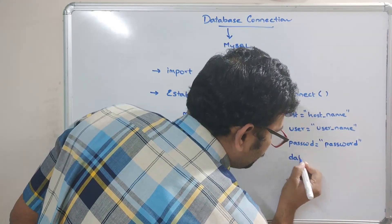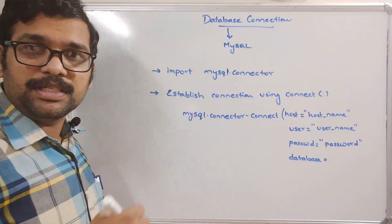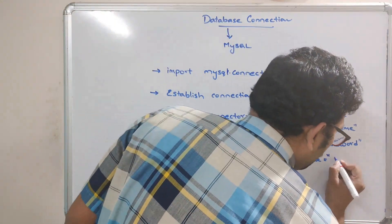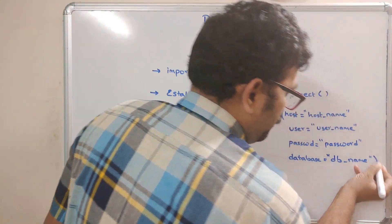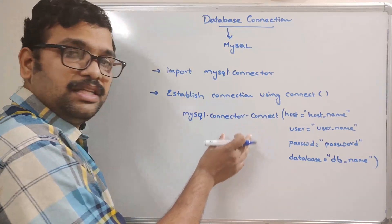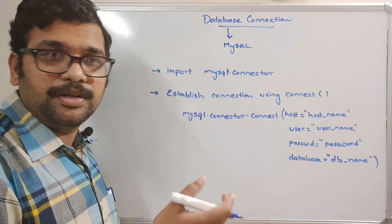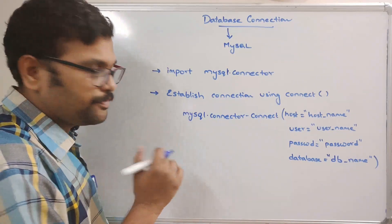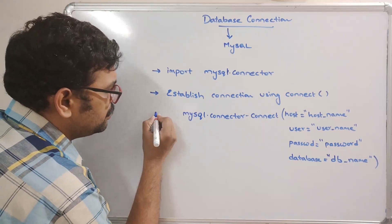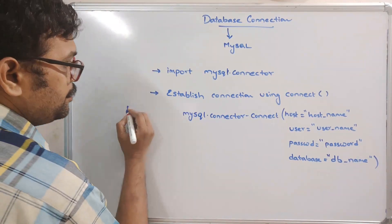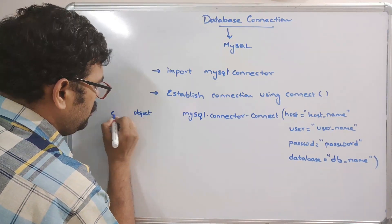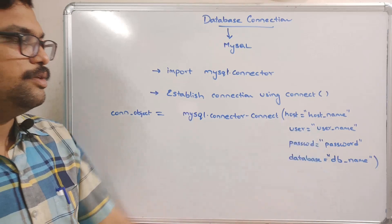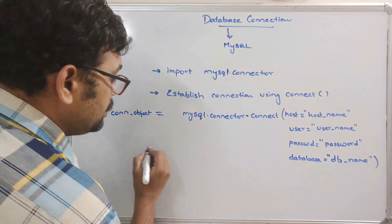The fourth parameter is the database name. A MySQL server can have multiple databases, so we specify which database we need to access — database is equal to the db name. This is the complete syntax to establish the connection between MySQL and the Python application. We assign this to an object: object = mysql.connector.connect(...). This is the second step.